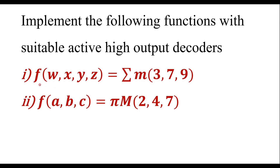The first function is f of w, x, y, z. It is a four-variable function and the minterms are 3, 7, and 9. We have to implement this function using an active high output decoder.